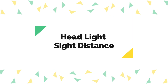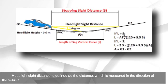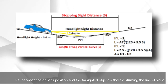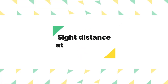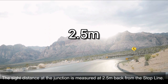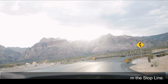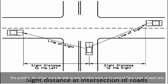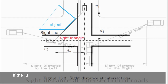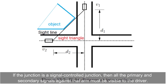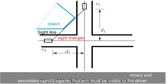Headlight sight distance is defined as the distance measured in the direction of the vehicle between the driver's position and the farthest visible object without disturbing the line of sight. Sight distance at intersections is measured at 2.5 meters back from the stop line, from which the driver must be able to see all other arms up to their stop lines. If the junction is signal-controlled, all primary and secondary signals for that arm must be visible to the driver.